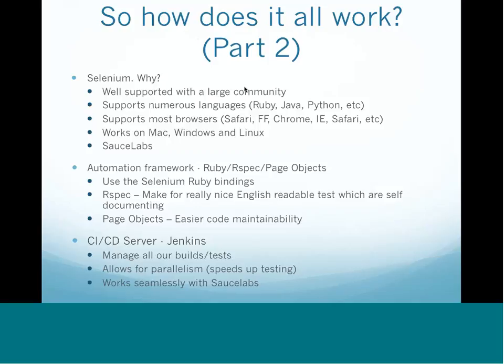In terms of the automation framework, the decision I made was to go with Ruby, RSpec, and page objects. I happen to like the Ruby binding specifically because it allows me to use RSpec. For anybody who hasn't used RSpec, it's a really nice TDD test-driven framework for Ruby that allows you to write really nice, English and self-documenting tests. We also use the page object methodology, which lets us abstract out all the Selenium details — where elements are found — from the actual tests themselves, so someone who doesn't know Selenium can still read a test and understand its purpose.